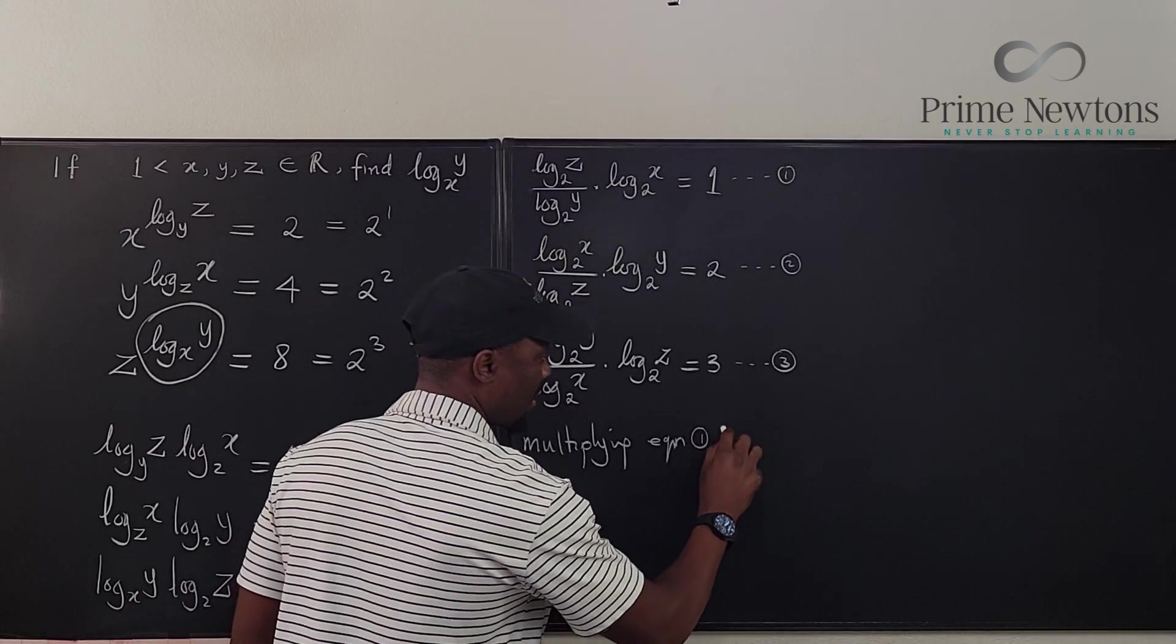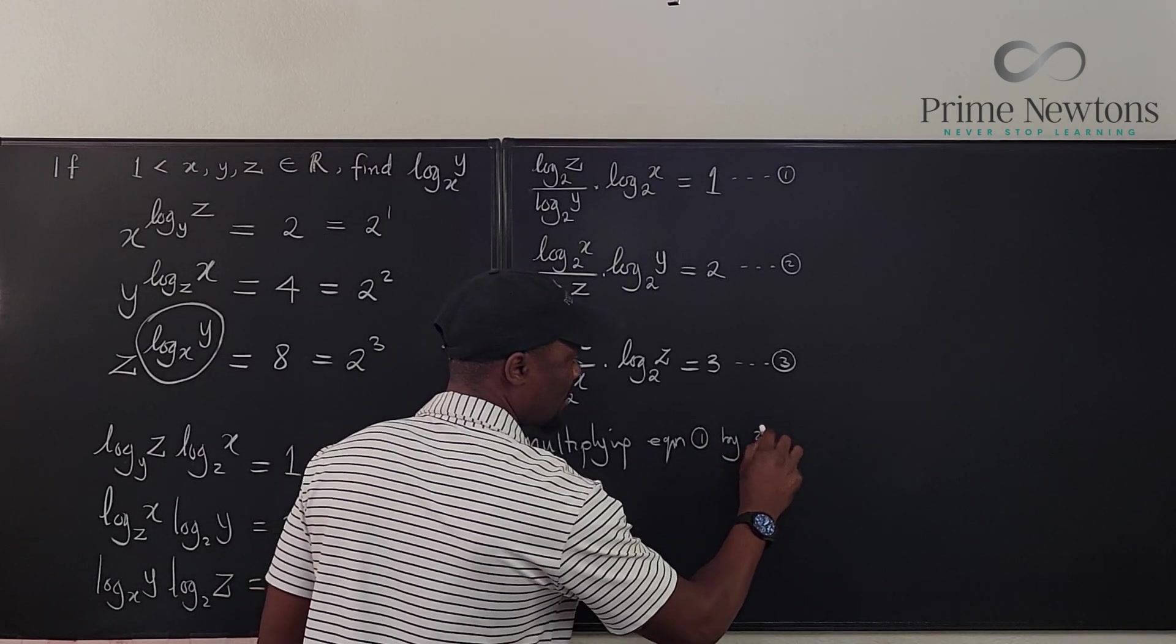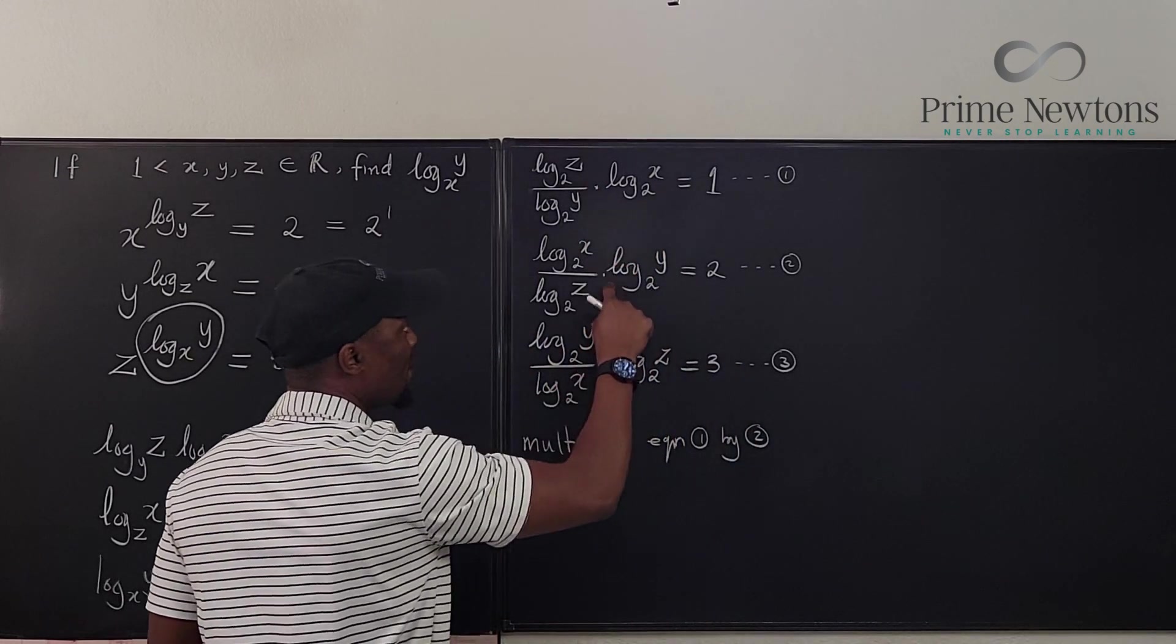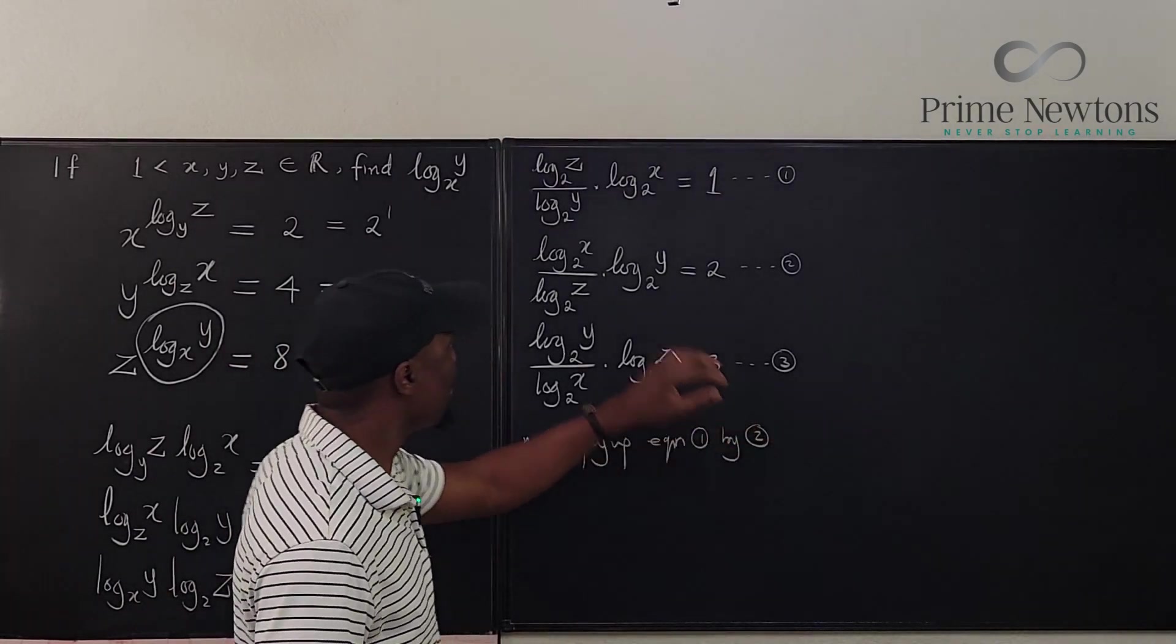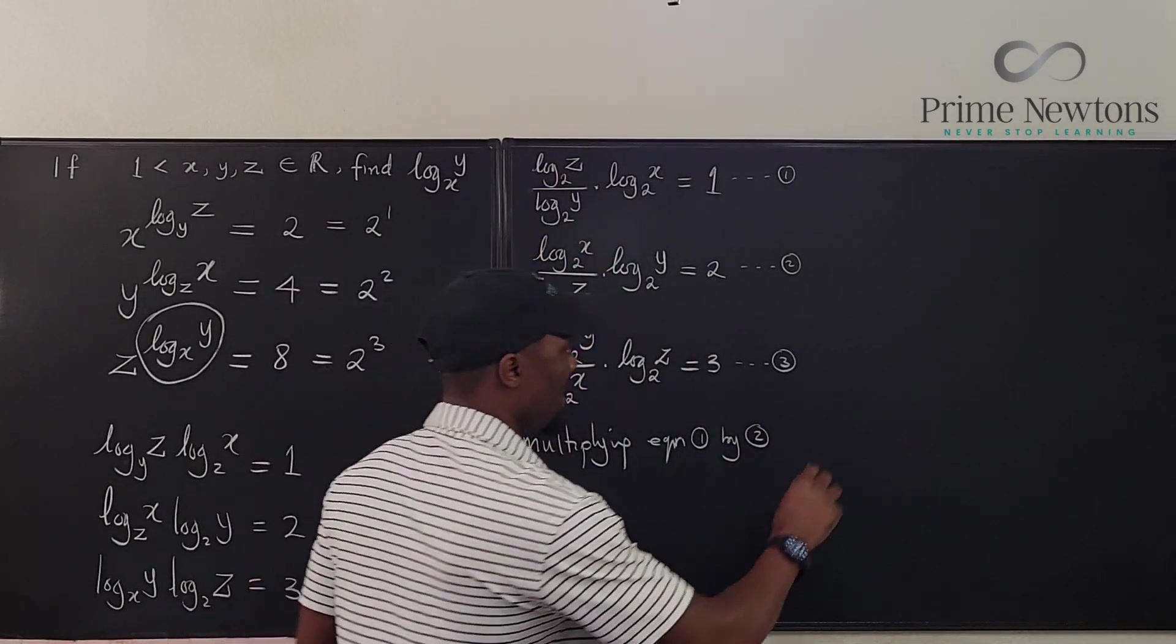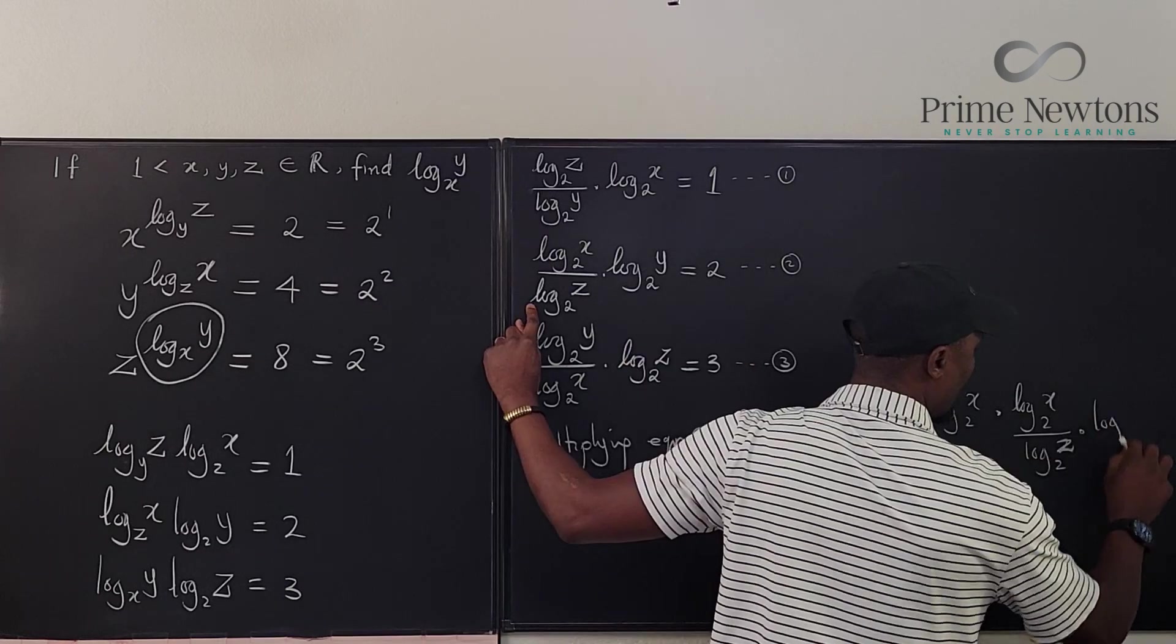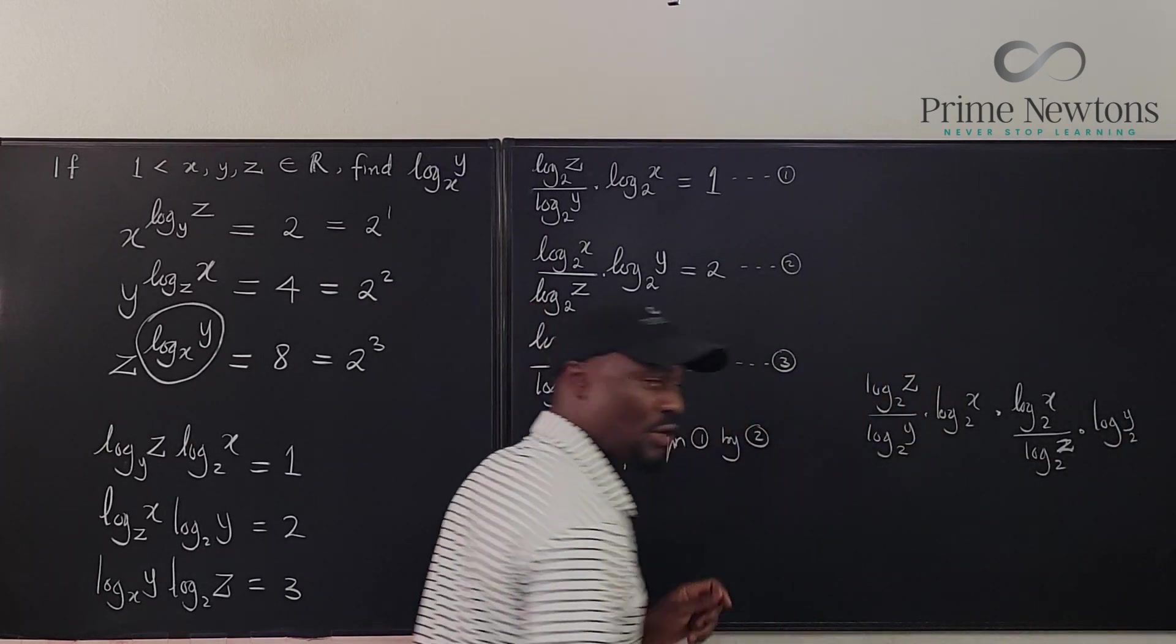Equation one by two. If you multiply these two equations, okay, I'm going to write it out here. See what happens. You multiply this by this, you're going to have log y base two. So notice what happens.